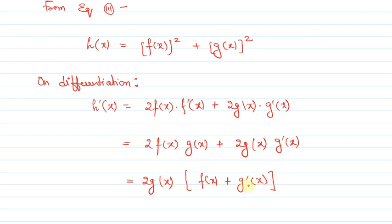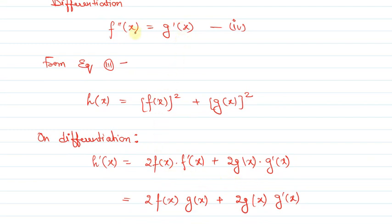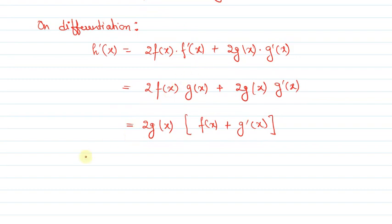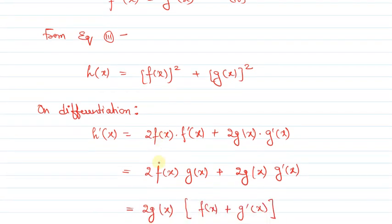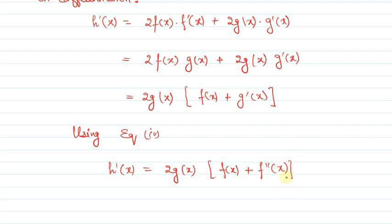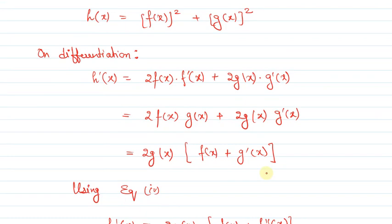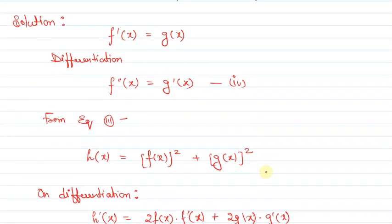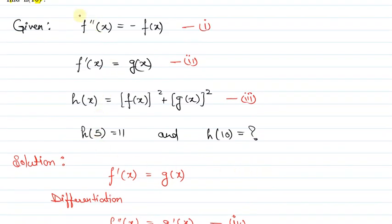Now g'(x) = f''(x), using equation 4 (since differentiating equation 2 gives g'(x) = f''(x)). So we get h'(x) = 2g(x)·f(x) + 2f(x)·f''(x). Now f''(x) = -f(x) from equation 1, so substituting that in from equation 1.